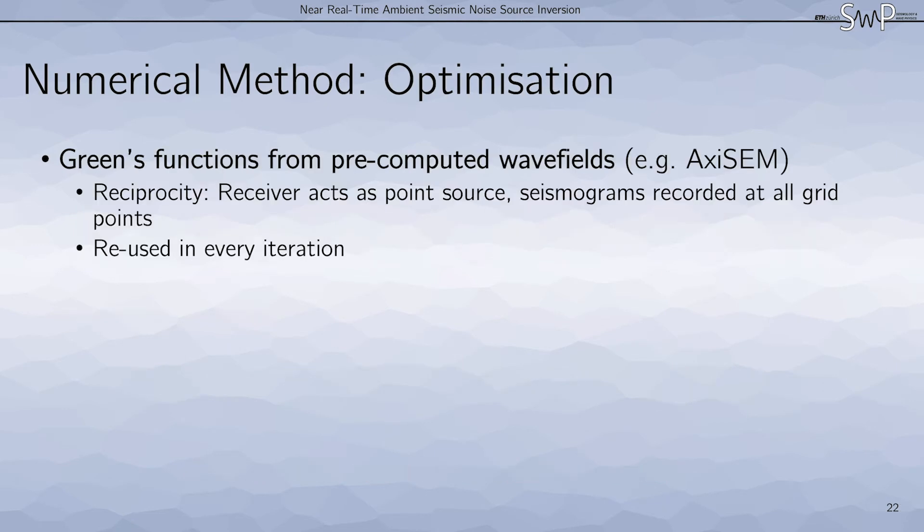To optimize the computation of the Green's functions, we use pre-computed wave fields, in our case from AxiSEM. These are computed using the principle of reciprocity, where the receiver acts as a point source and we record the seismograms at all grid points. This then gives us a Green's function database that we can reuse in every iteration.